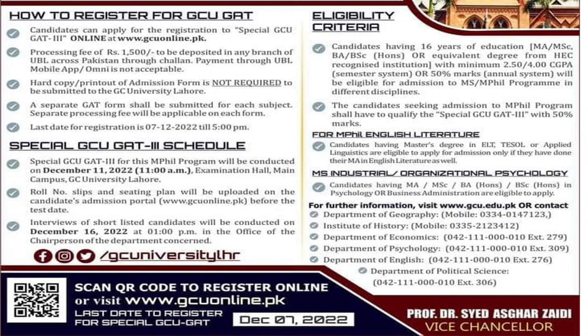For the English department, the chairperson will conduct interviews in their office. Now, the eligibility criteria: sixteen years of education is required. For MPhil English Literature, you should have MA English Literature, BS English Literature, or BS English from a recognized university, or an equivalent degree with a minimum CGPA of 2.5. If you have an annual system, you should have 50% marks.